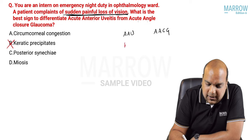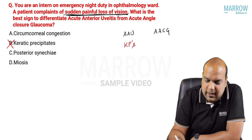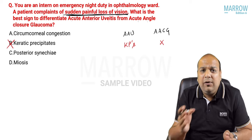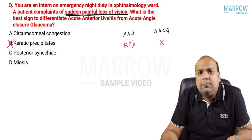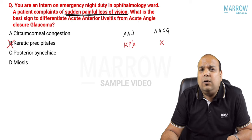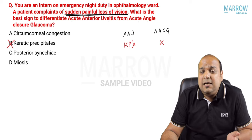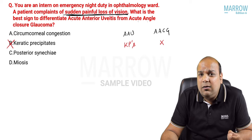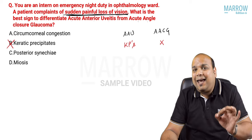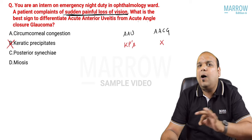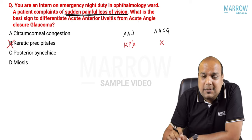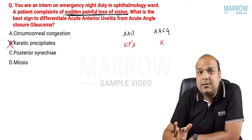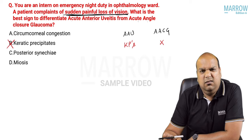Keratic precipitates (KPs) are seen in anterior uveitis, not in angle closure glaucoma - but how will you see whether the patient has KPs? KPs cannot be seen on torchlight; KPs can only be seen on slit lamp. You don't know how to use a slit lamp as an intern on night duty.